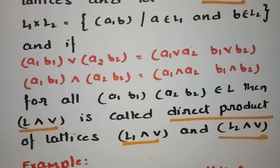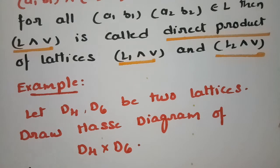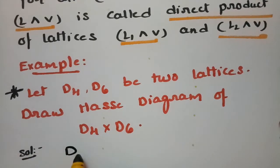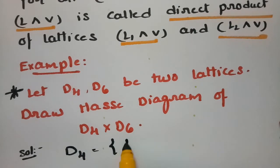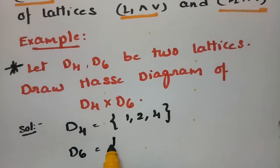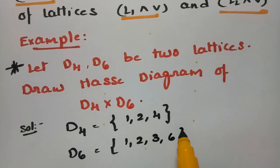Using this definition, I'm going to solve an important example problem. Let D4 and D6 be two lattices and we have to draw the Hasse diagram of D4 × D6. D4 means all the divisors of 4, that is 1, 2, and 4. D6 is all the divisors of 6: 1, 2, 3, and 6.